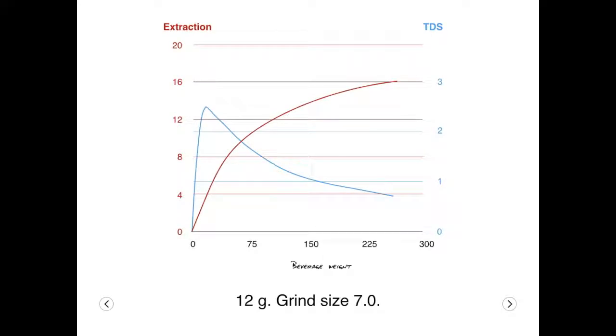Plotting the extraction percentage and the concentration for drip coffee versus beverage weight, we can see how the concentration on the blue line is related to the beverage weight, whereas the extraction on the red line will increase rapidly at first but also throughout the pour.